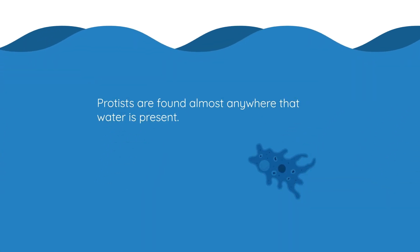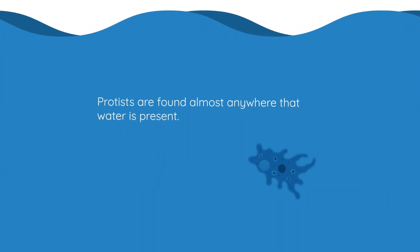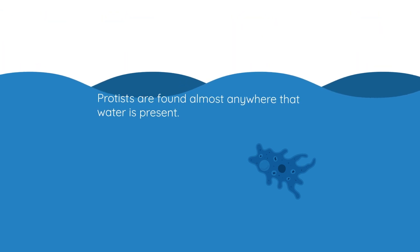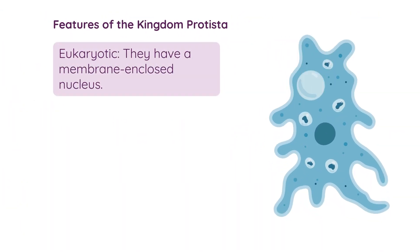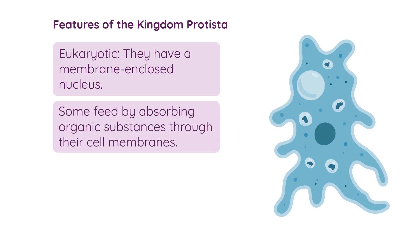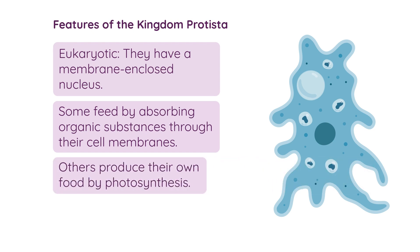Protists are found almost anywhere that water is present. The main features of this kingdom: they are eukaryotic, meaning they have a membrane-enclosed or true nucleus. Some protists feed by taking in organic substances and absorb these nutrients through their cell membranes. Other protists like algae can produce their own food by carrying out photosynthesis.